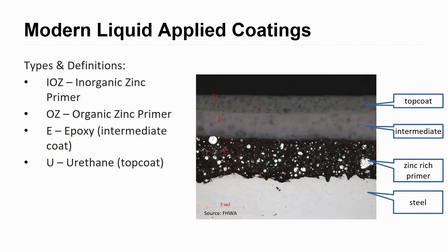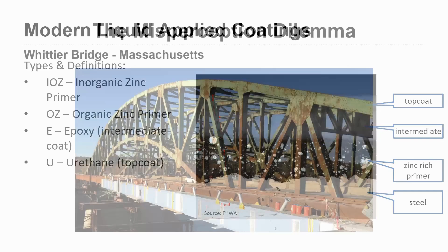One of the more common systems for steel bridges is the modern liquid applied coating system — paint systems. What you see on the right is a cutaway of a typical paint system: the steel substrate on the bottom, usually a zinc-rich primer as the first coat, an intermediate epoxy coat, and then a urethane top coat. This is the traditional three-coat paint system. You can use either inorganic or organic zinc-rich primer, and there are also two-coat and one-coat systems available.